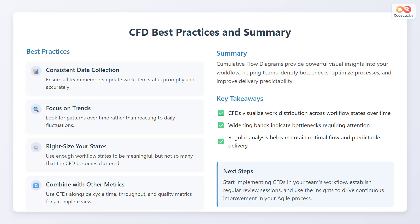In summary, cumulative flow diagrams provide powerful visual insights into your workflow, helping teams identify bottlenecks, optimize processes, and improve delivery predictability. Key takeaways are: CFDs visualize work distribution across workflow states over time; widening bands indicate bottlenecks requiring attention; and regular analysis helps maintain optimal flow and predictable delivery. As a next step, start implementing CFDs in your team's workflow, establish regular review sessions, and use the insights to drive continuous improvement in your Agile process.